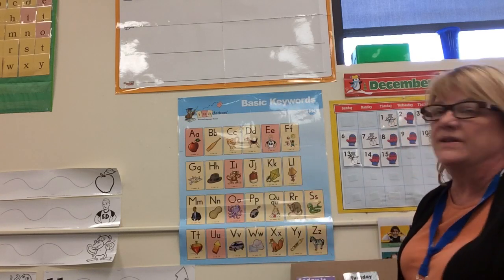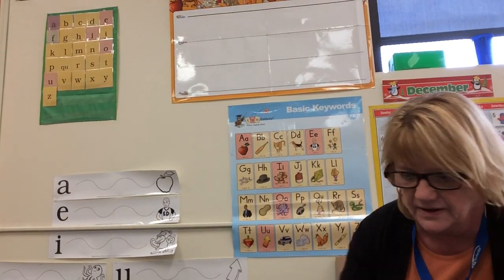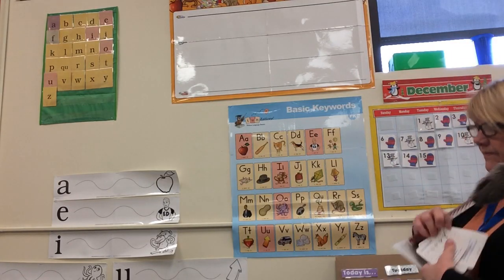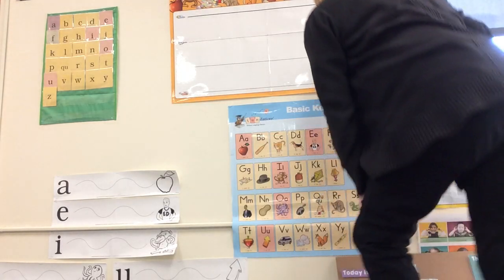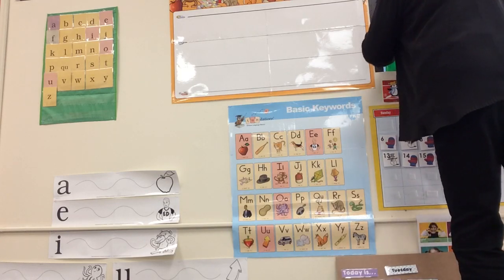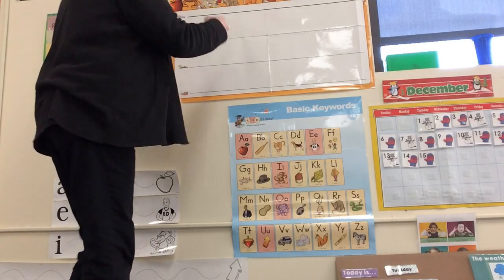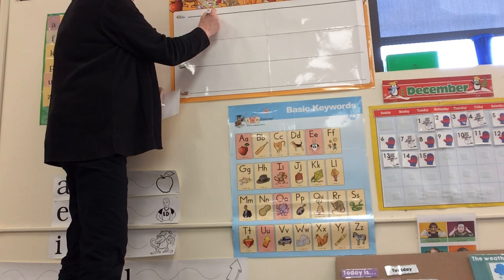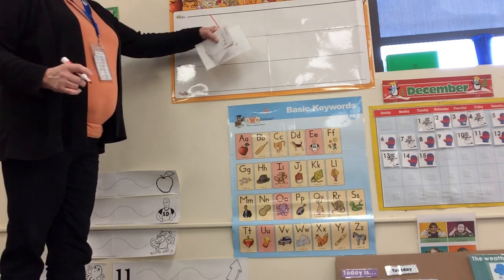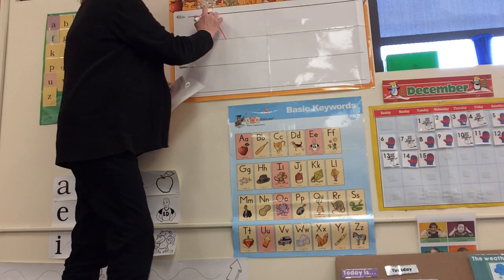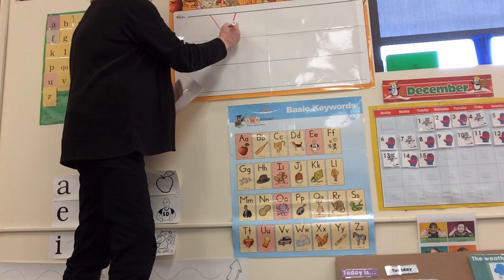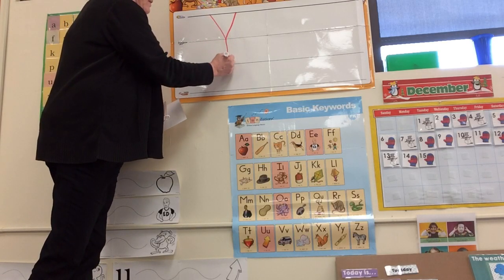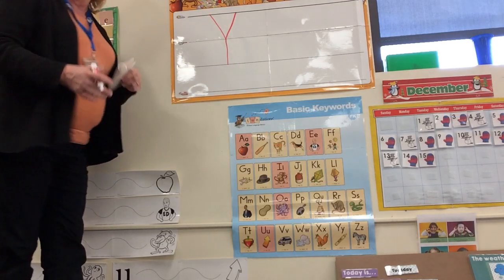Now we're gonna go up to the poster and we are going to learn how to write the letter Y. We're gonna start here on the skyline and we're gonna cruise on down to the plane line like that. Then we're gonna leave some space and start here and go down to the other line on the plane line. Then from there we're gonna go straight down from the plane to the grass — straight down. That's an uppercase Y.